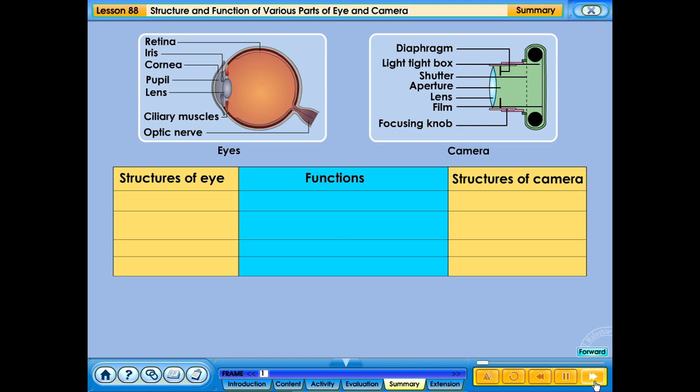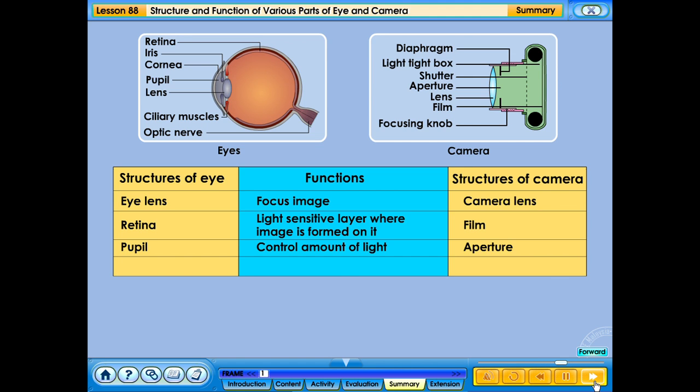These are the similarities of the structure and function between the human eye and a camera. The human eye uses eye lens to focus an image, while the camera uses camera lens. The eye uses retina as a light-sensitive layer for image to be formed whereby camera uses a film. To control amount of light, an eye uses pupils and the camera uses an aperture. The human eye uses iris to control the size of the aperture, while the camera uses diaphragm.